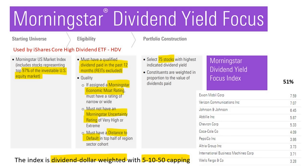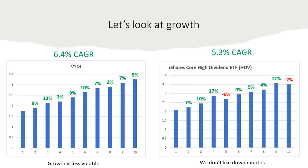Morningstar's methodology is less transparent because of those proprietary signals. Looking at dividend growth: VYM's growth is less volatile — Vanguard's larger number of companies seems to help reduce volatility. The chart shows annual payment increases: year two up 9%, year three up 13%, year four up 3%. HDV actually has some down years — a 17% increase in year four, then down 6% in year five, and recently down 2%. The compound annual growth rate of payments is higher for VYM at 6.4% versus HDV at 5.3%.